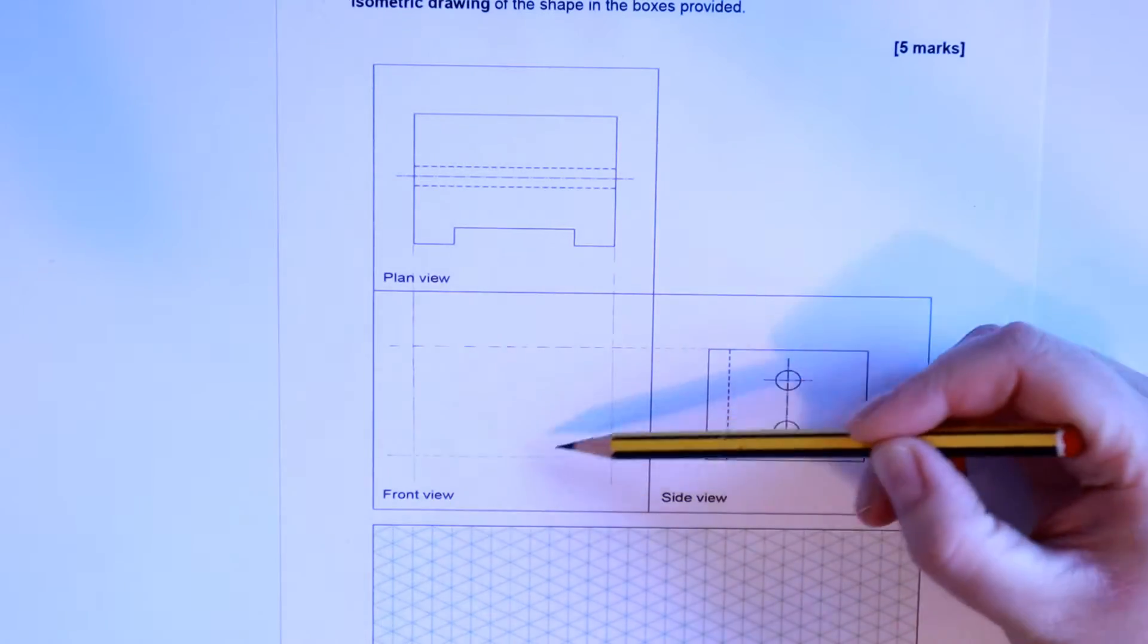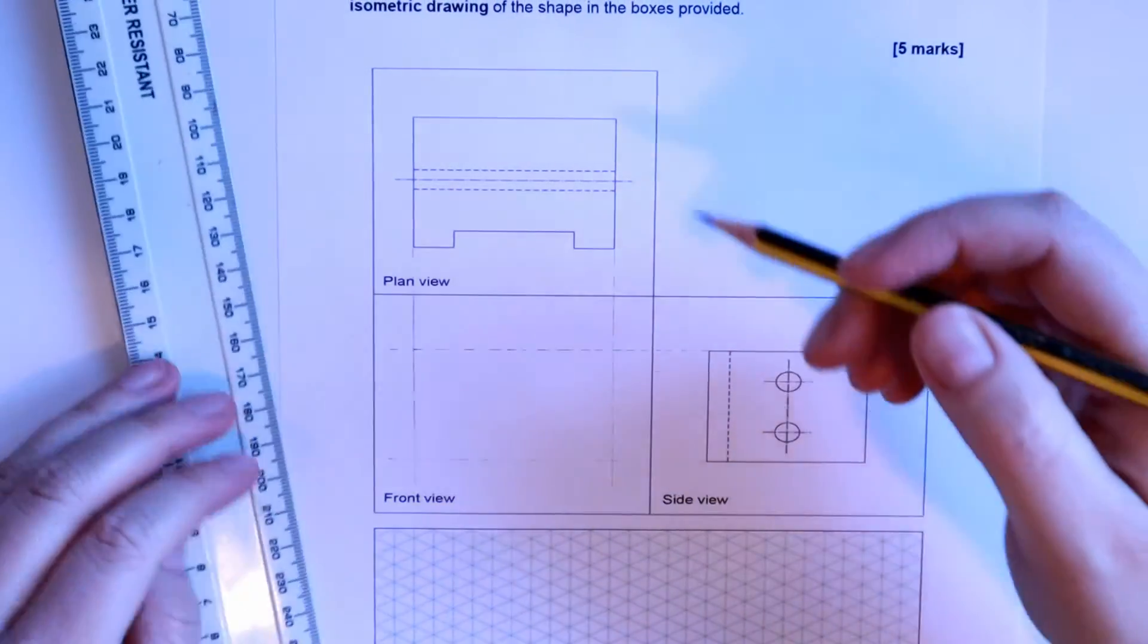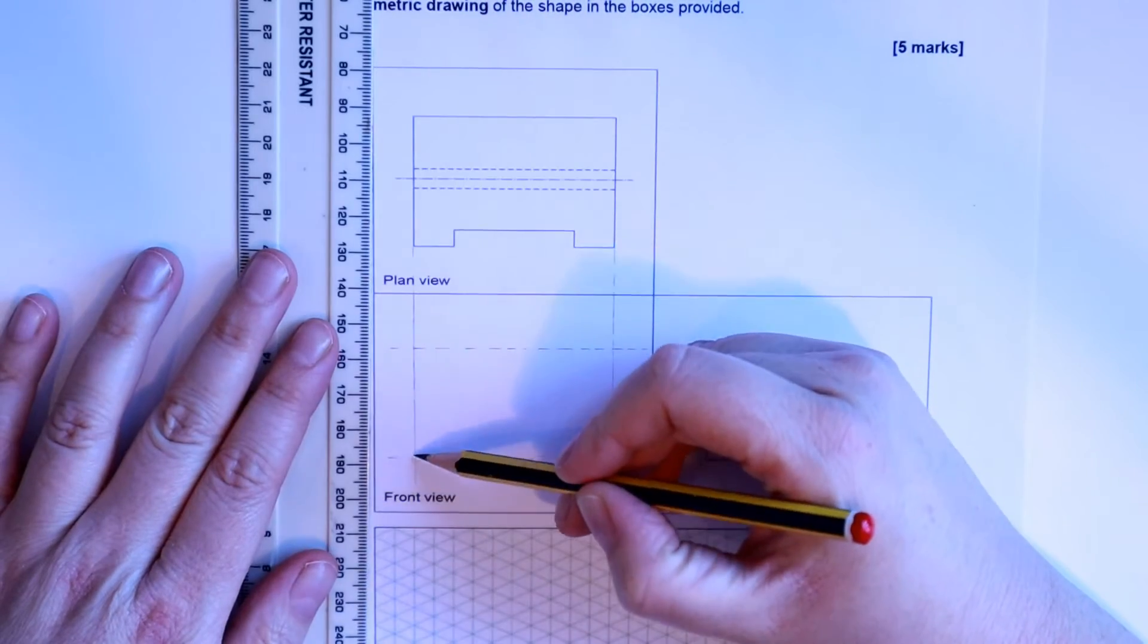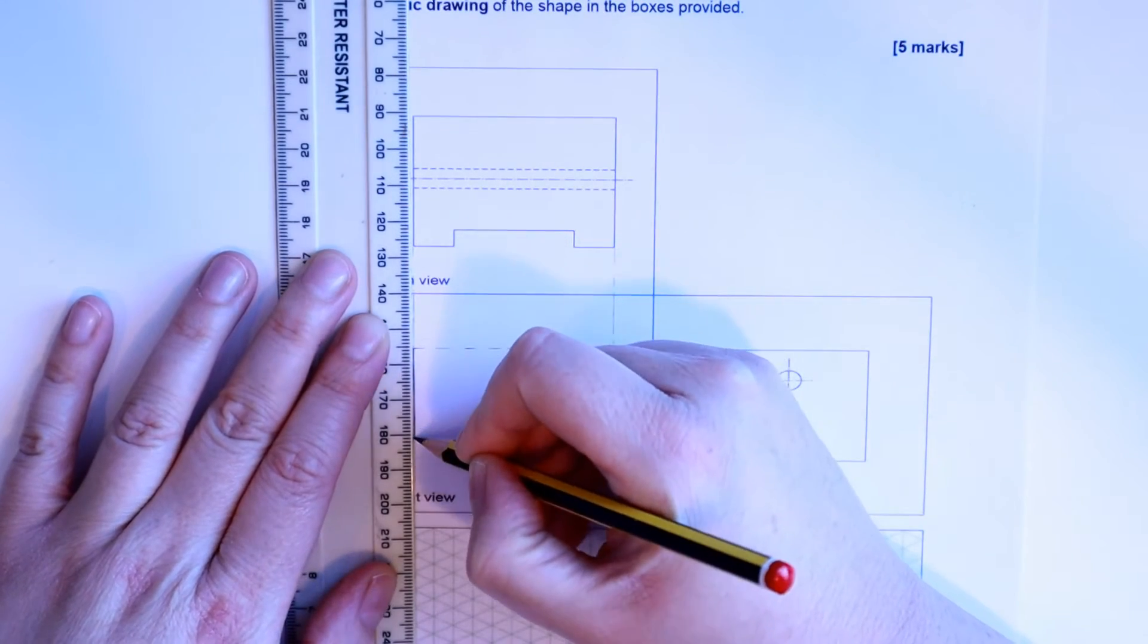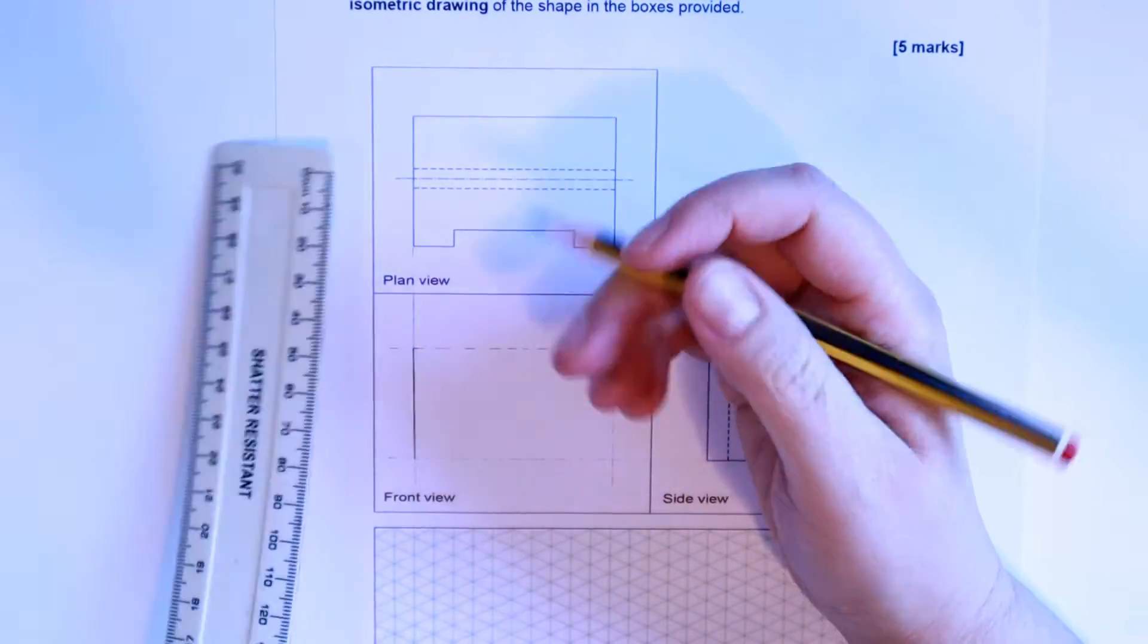Now I know this is where I need to draw my front view. So I know the front view is going to have solid lines for that shape. I'm just going to go a little bit harder over the projection lines I've just drawn.